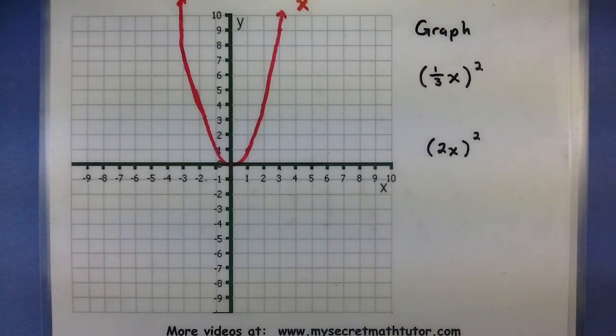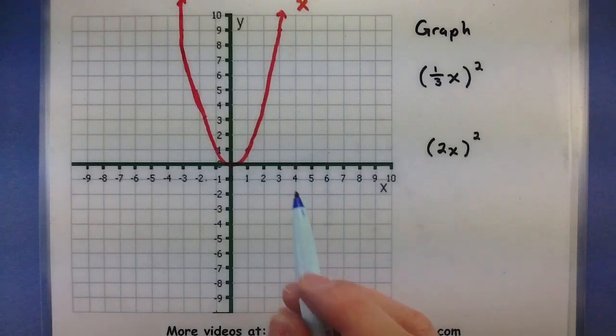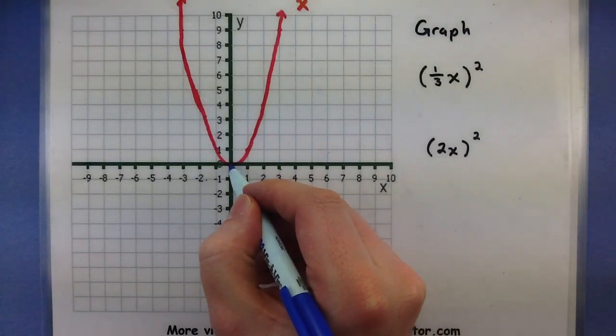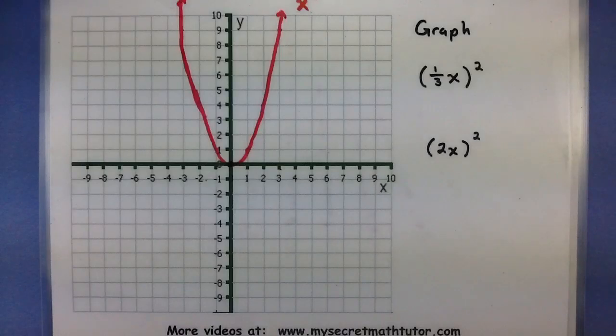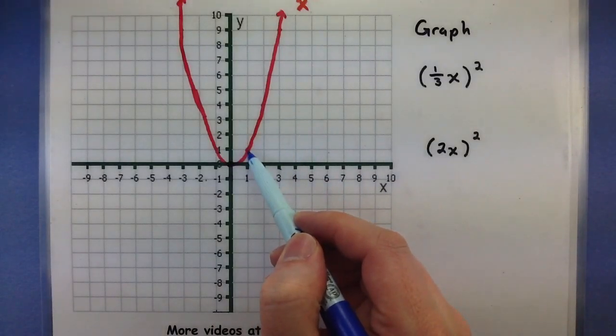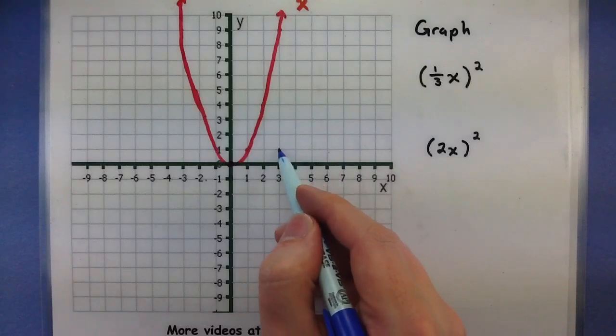Now to figure out where we need to put our new points, we're actually going to take all of our x values and multiply them by 3. So the x value here is 0, 0 multiplied by 3 is 0. The x value here is at 1, multiplied by 3, now at 3.